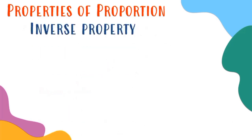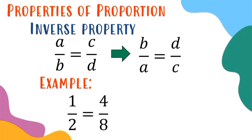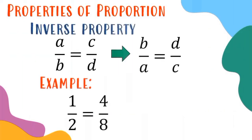The third property is the inverse property — inverse means reverse. Given a over b equals c over d, applying the inverse property gives b over a equals d over c. Applying this to 1/2 equals 4/8 gives 2/1 equals 8/4. Cross multiplying the new result still yields the same answer.